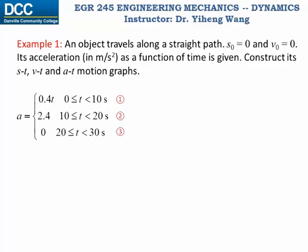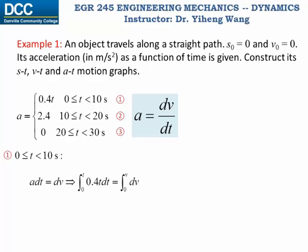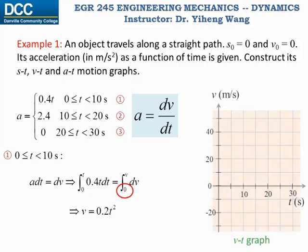Next let's work on the v-t graph. We use the kinematic equation a equals dv/dt, so a·dt equals dv. For the first time period, substituting a equals 0.4t and integrating both sides — with the lower limit being the initial condition that velocity equals zero — we get velocity equals 0.2t². We sketch this on the v-t graph for 0 to 10 seconds, and calculate that at the end of this period the velocity has increased to 20 meters per second.